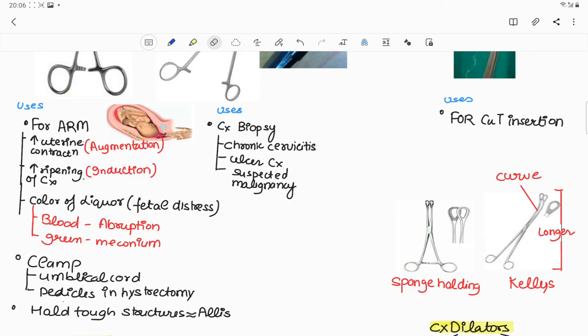Number two use is for clamping of umbilical cord or pedicles in hysterectomy. Number three is to hold tough structures like Allis tissue forceps.